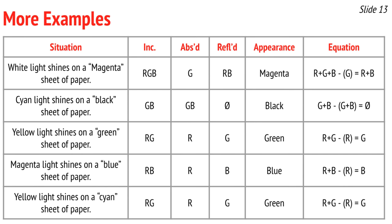Here's a final reference table with five different situations. The incident column shows what primary colors of light are hitting the object. The absorbed column is determined by what color the object is — for example, a magenta sheet of paper absorbs green light. The reflected column is determined by the math, and the appearance column is what reaches the observer's eye. You can use the color wheel to determine appearance from reflected colors, and the final column shows the color equation. Try covering the table and predicting each column yourself.